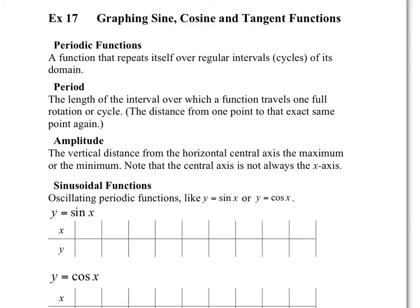Periodic functions — that's what sine and the cosine graph would represent. It's a function that repeats itself over and over in regular intervals and cycles of its domain. Tangent is also one of these functions, but acts a little bit differently.